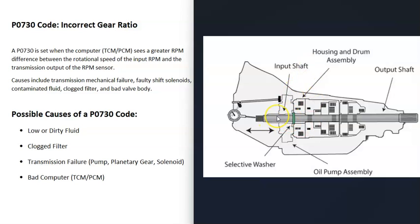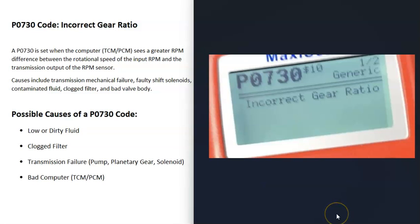Transmissions have an input shaft where power goes into the transmission from the engine. That power is sent through the transmission, which changes gears, and then goes to an output shaft that transfers power to the tires to move the vehicle forward. When you get a P0730 code, the computer is detecting some kind of issue between the input shaft and the output shaft. There are sensors on both shafts sending information back to the computer about how fast those shafts are spinning, and the computer is seeing that this information is wrong.